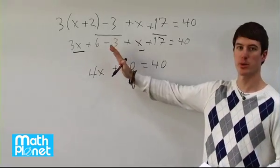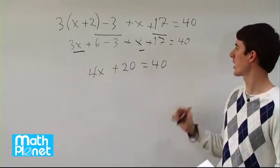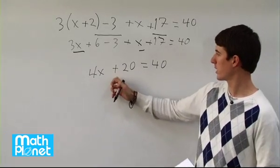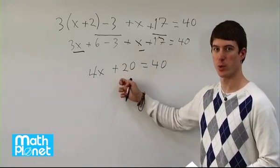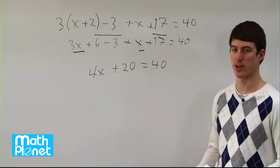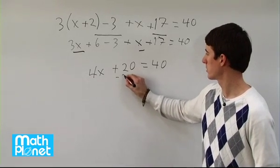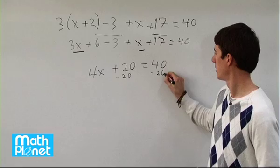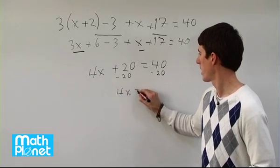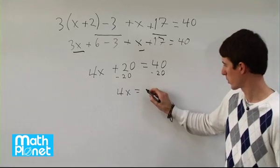Now we've simplified and distributed as much as we can on the left-hand side. The right-hand side is already simple. We need to do an inverse operation to get rid of the 20. We subtract 20 from both sides. That gives us 4x equals 40 minus 20, which is 20.